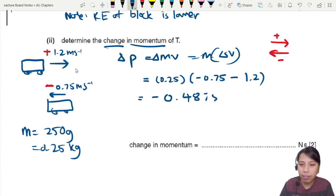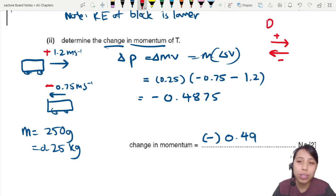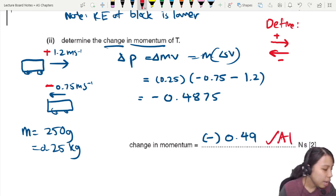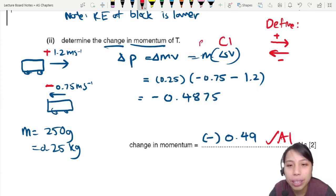I will get a value of negative 0.4875. To 2 significant figures this is 0.49. If you put a negative, also correct. If you don't, also fine because it depends on how you define your system. One mark for final answer, one mark if you remember p = mv.